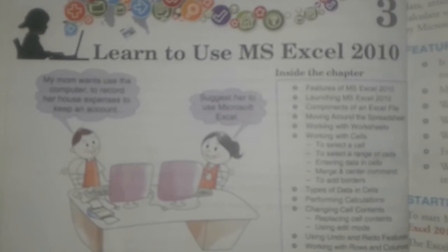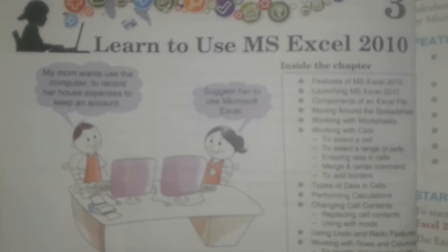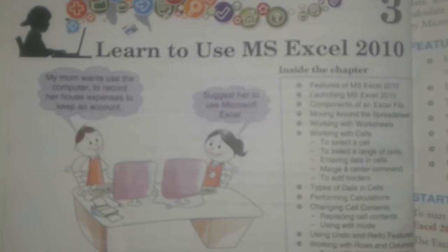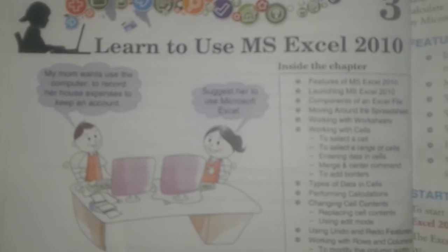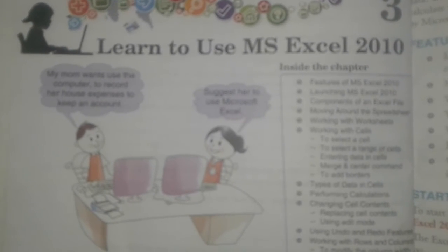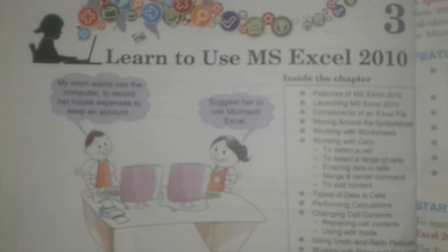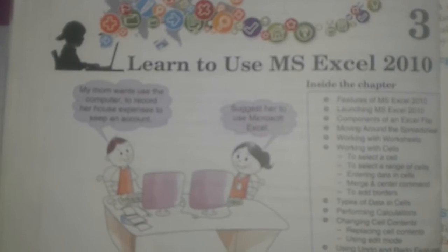Whenever we open a file in Excel, by default we automatically get three sheets: Sheet 1, Sheet 2, and Sheet 3. If you want to rename or change the name of those sheets, you can do so. How can you change the name of the sheets?